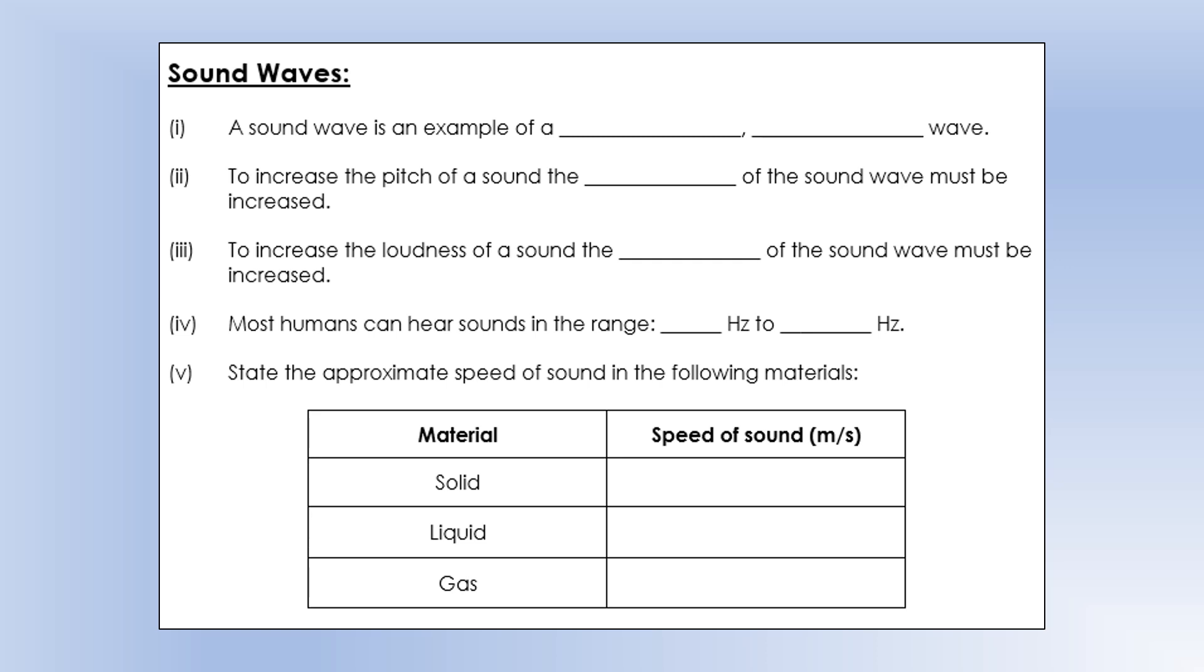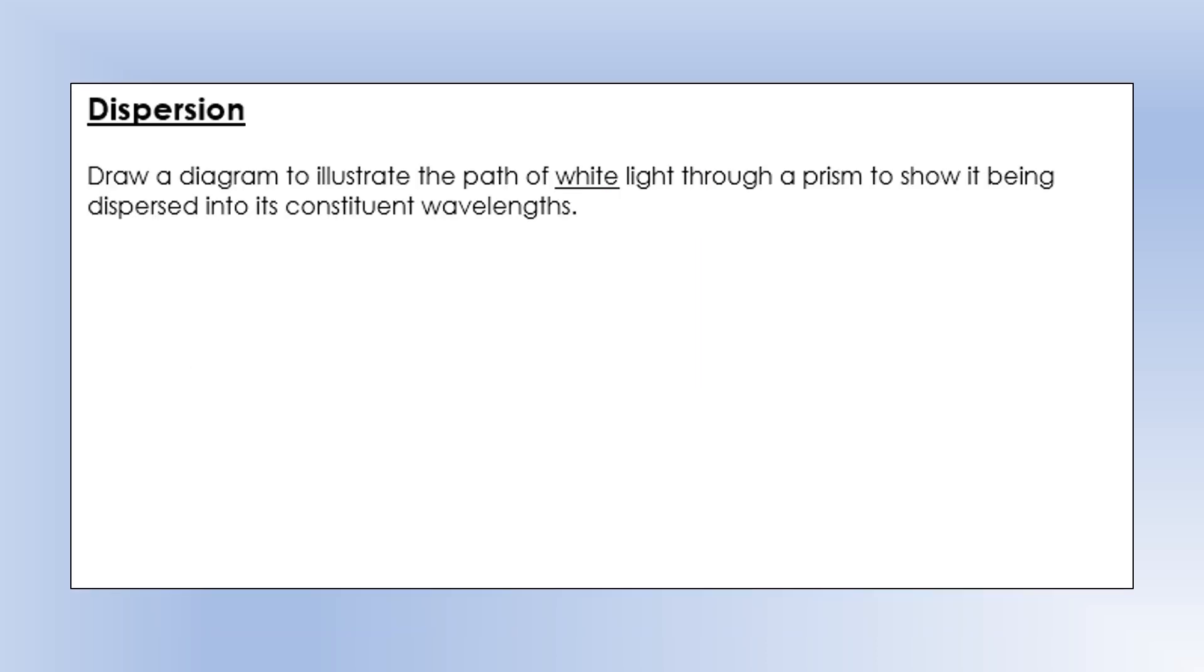So moving on to look at sound waves. A sound wave is an example of a mechanical wave, because they rely on the movement of particles. So sound doesn't travel across the vacuum of space, for example, which is good, otherwise it would be very loud. And they're also a longitudinal type wave, so they rely on forming compressions and rarefactions. So the pitch, or how high a sound is, is determined by the frequency of the sound wave, and then the loudness is determined by the amplitude of the sound wave. So a bigger amplitude means a louder sound. Most humans, our ears can pick up anything in the range 20 to 20,000 Hz, although that top number does come down as you get older. So sound, as we said, is mechanical longitudinal, so we'd expect it to travel fastest in a solid and slowest in a gas, and indeed it does. It's in the region of 3,000-ish for a solid, about 1,500 for a liquid, and then just 300 for a gas.